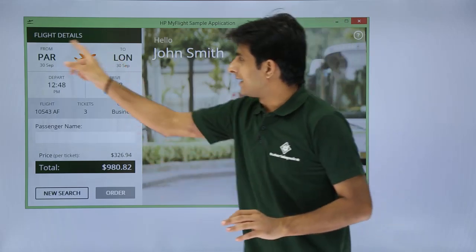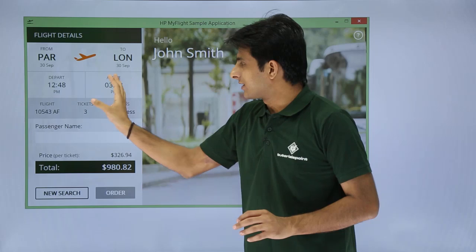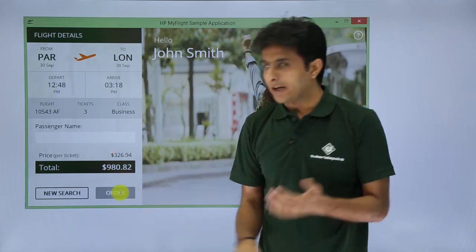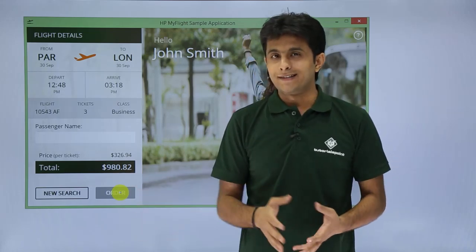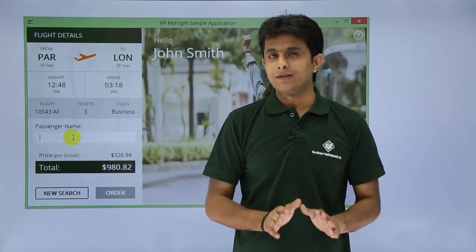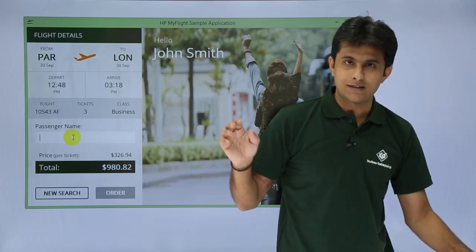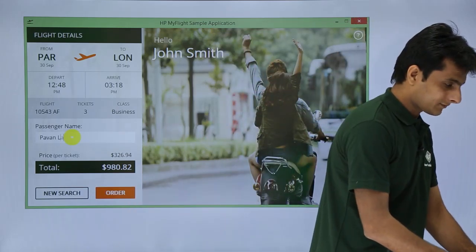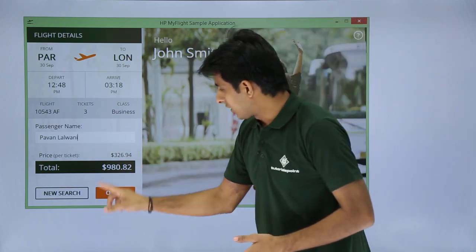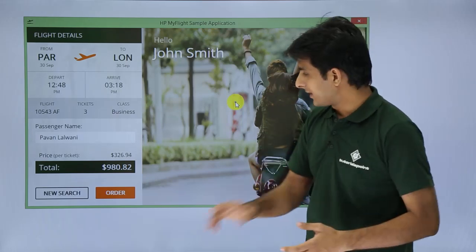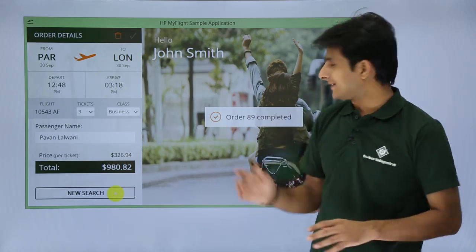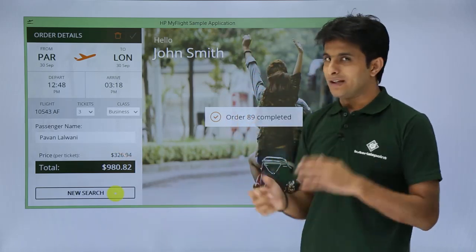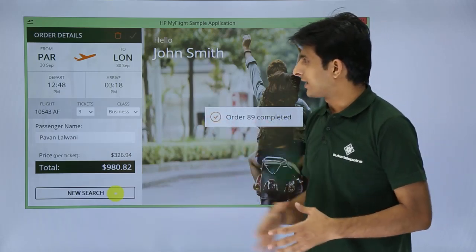Now I want to book the selected flight. The Order button is disabled until you provide a passenger name. As soon as I start typing — let's say 'Pawan Lalwani' — the button gets enabled. I click Order, it processes, and a confirmation appears: Order number 89 is completed. Note that every time you click Order, a new unique order number is generated, so it will keep changing.